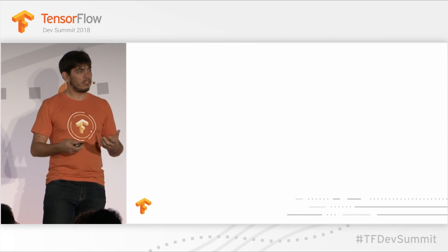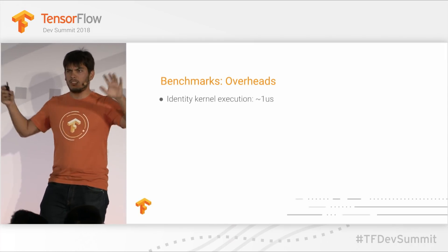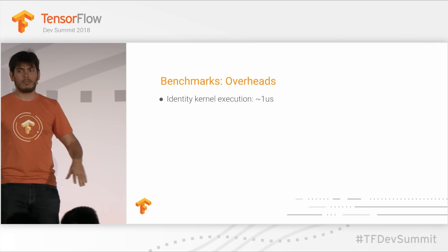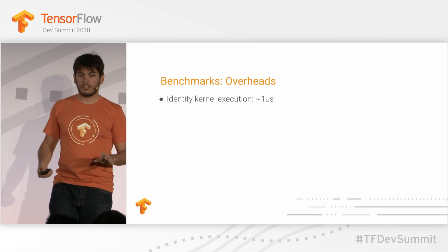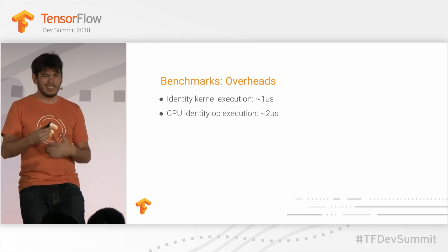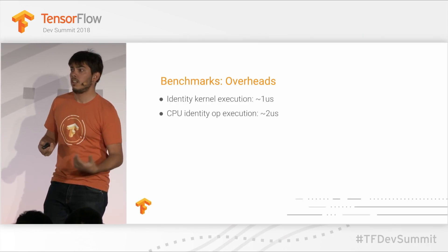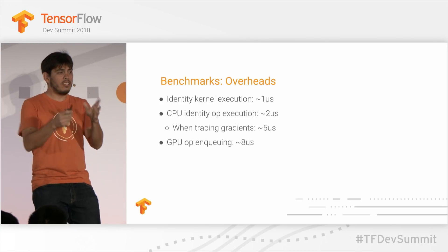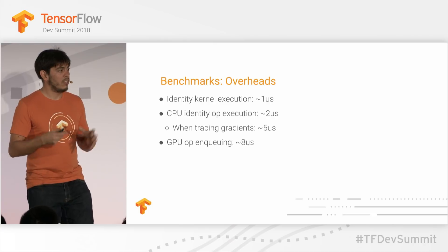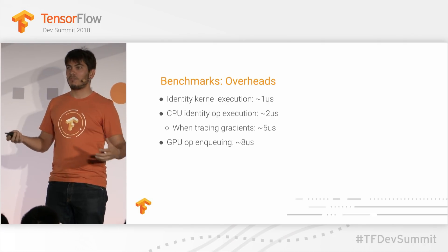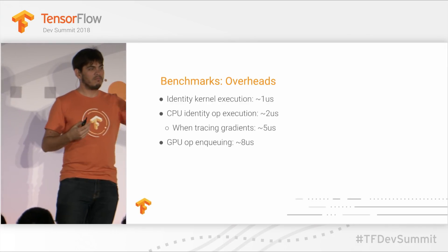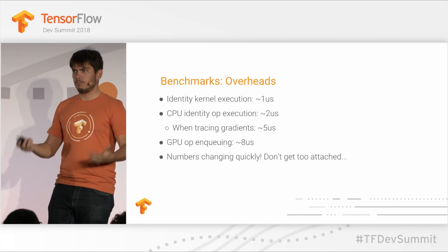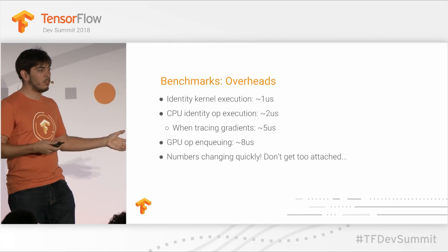Please don't get attached to these numbers — we have many more benchmarks and are optimizing eager performance very aggressively. When doing smaller operations, there are some overheads: a no-op takes about a microsecond in TensorFlow, and eager execution adds an extra microsecond of overhead. Tracing gradients adds another three microseconds. But enqueuing something on the GPU stream alone takes single-digit microseconds, so if you execute enough computation to keep a GPU busy, you're unlikely to see anything bad from using eager execution.